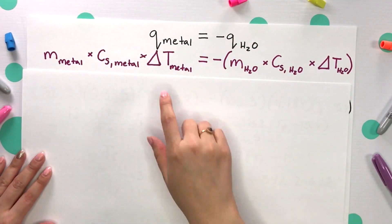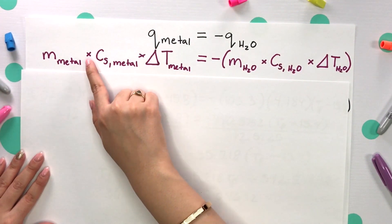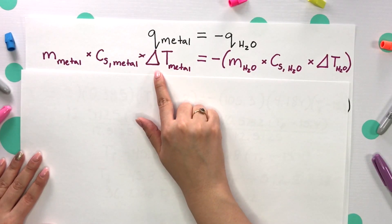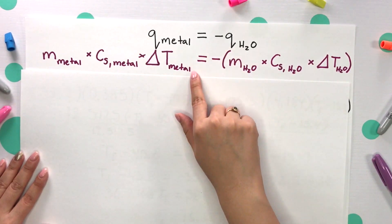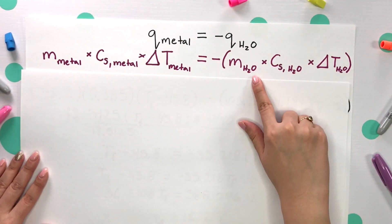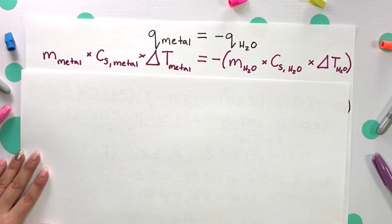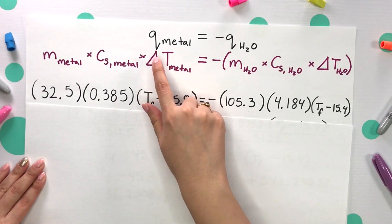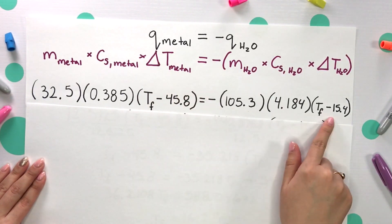Expanding this formula, because Q equals mcΔT, we have: mass of our metal times specific heat capacity of our metal times change in temperature equals the negative of mass of our water times specific heat capacity of our water times change in temperature of water. Change in temperature means final temperature minus initial temperature. Plugging in all the values and changing ΔT to T final minus T initial for both sides.